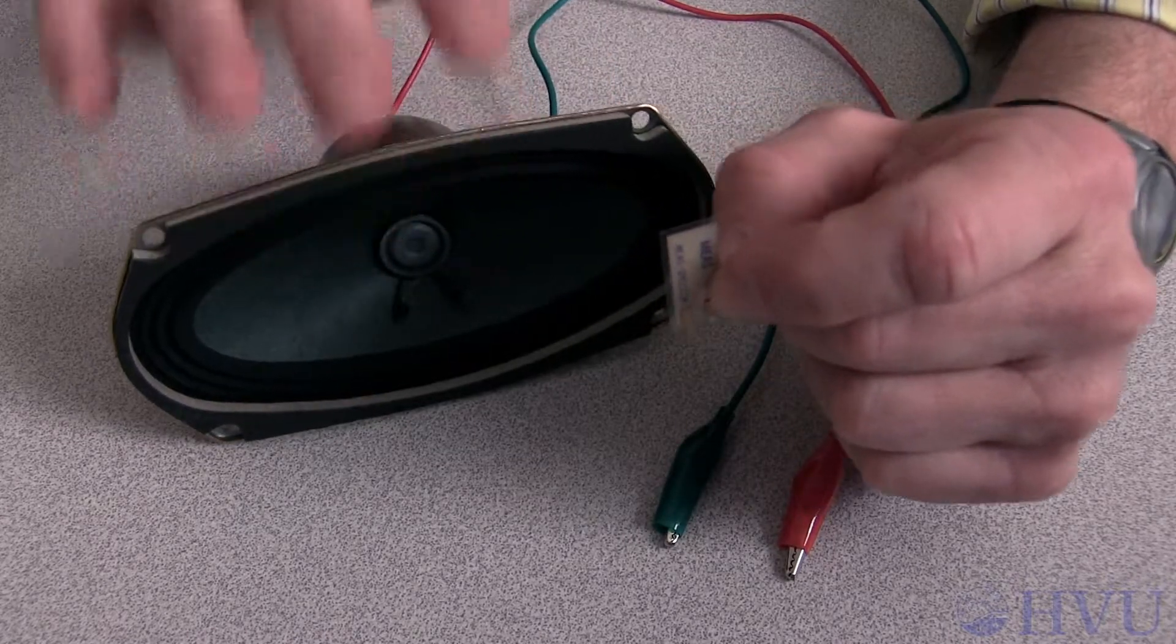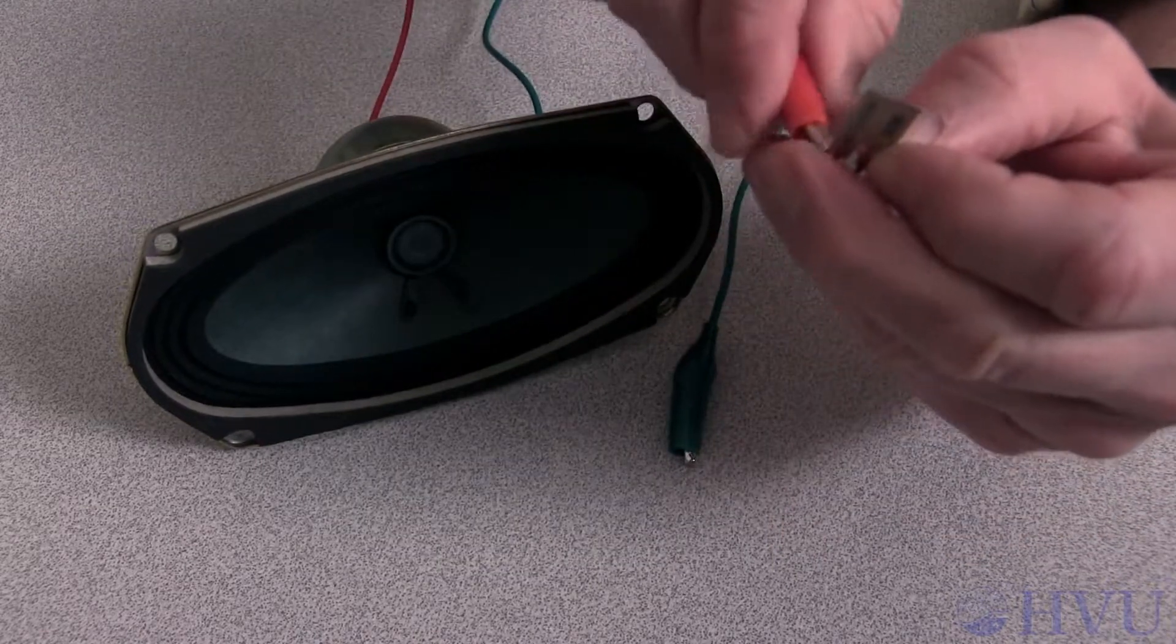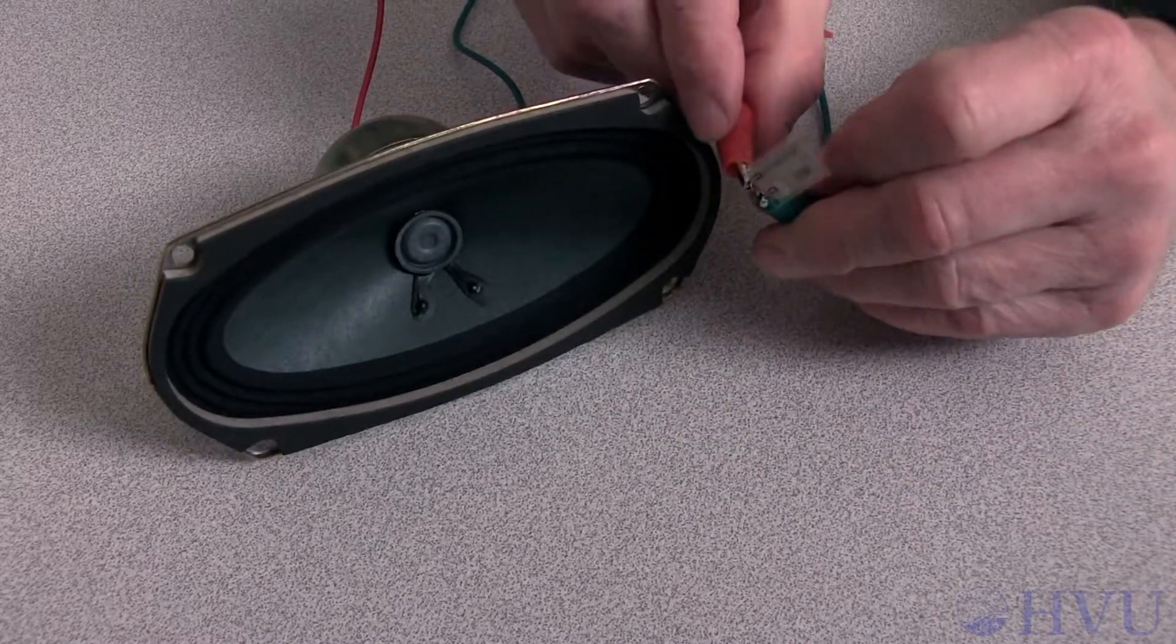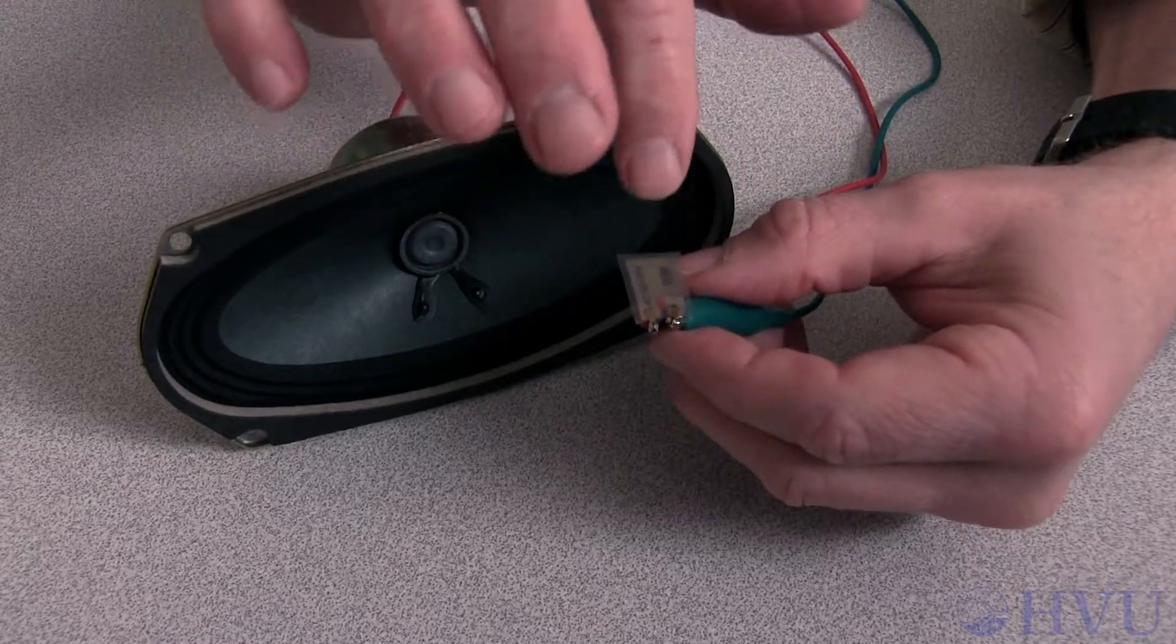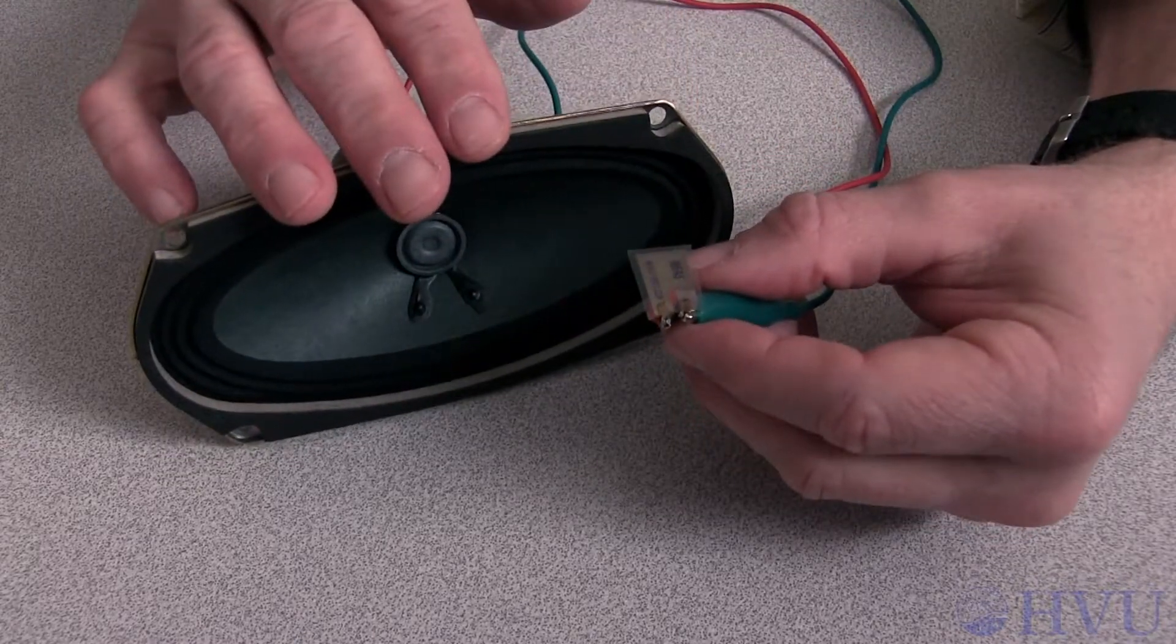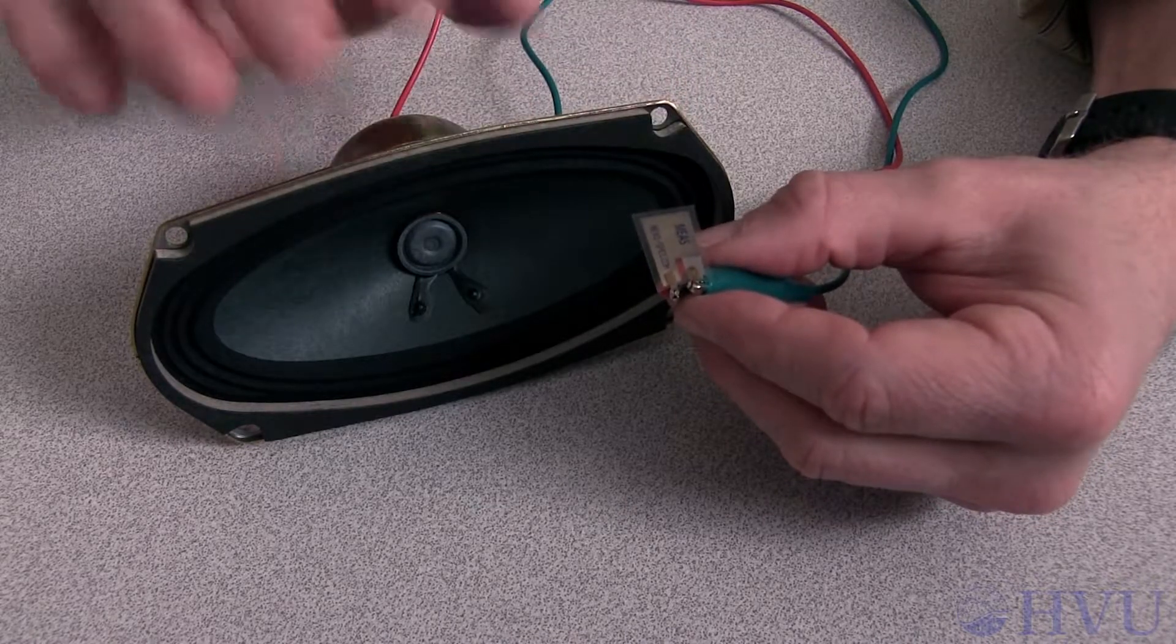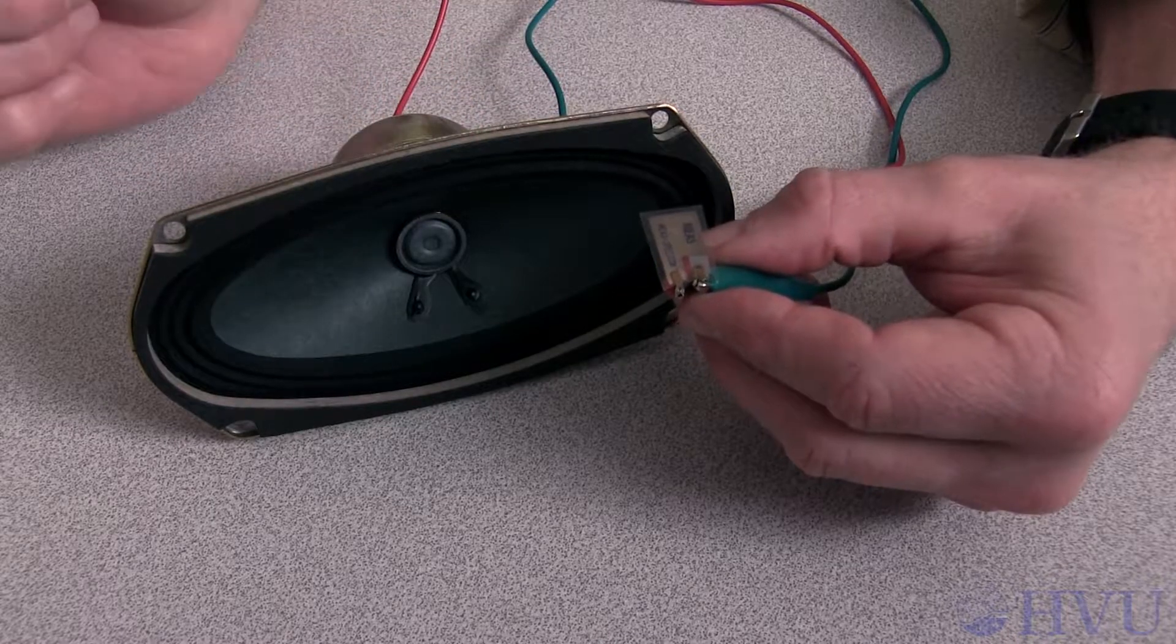This is my speaker. If I connect the terminals of the sensor to the speaker and then flick the sensor, we should get some sound out of the speaker. Unfortunately this sensor doesn't put out nearly enough power to make the speaker cone move. We need to amplify the power leaving the sensor before it can move the speaker.